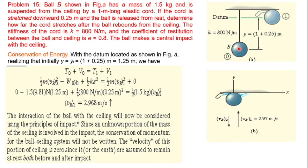At position 1, the ball is at the ceiling. The kinetic energy is half m VB1 squared, where VB1 is the velocity at position 1. At this point the cord is not stressed — the cord stress is zero — so the elastic potential energy stored in the cord is also zero. The ball is at the ceiling (datum), so gravitational PE is also zero at position 1.